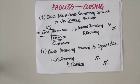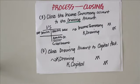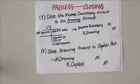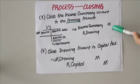Next, you need to close the income summary account to the drawing account. A credit balance in the income summary pertains to a net income, while a debit balance means a net loss. For our example we have a net income of 200,000, so the income summary has a credit balance. To close it, we make a debit to the income summary account and a credit to the drawing account, as shown here.